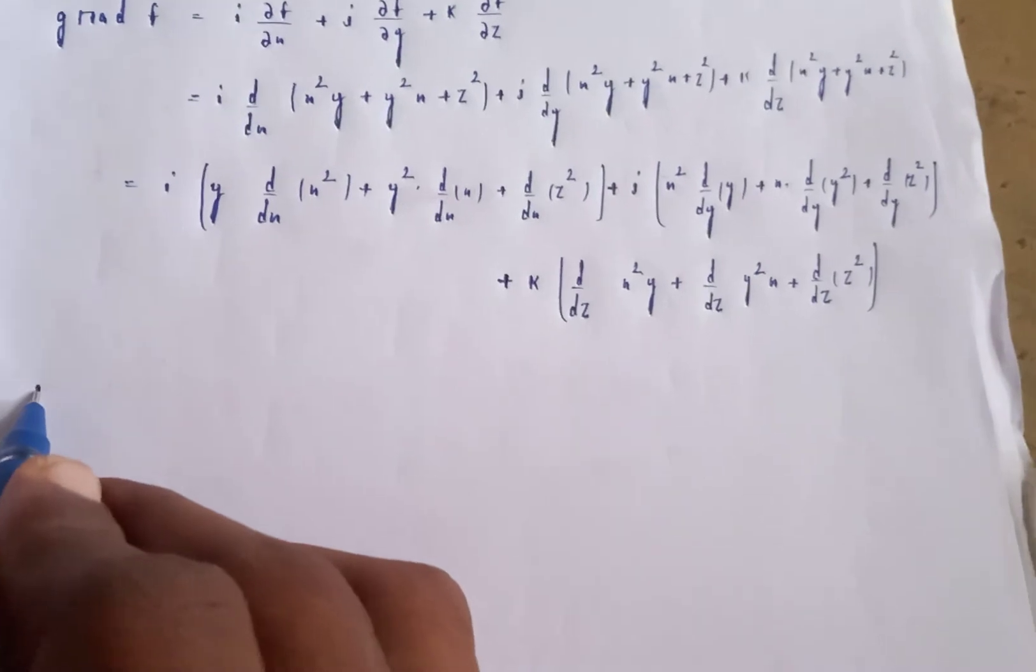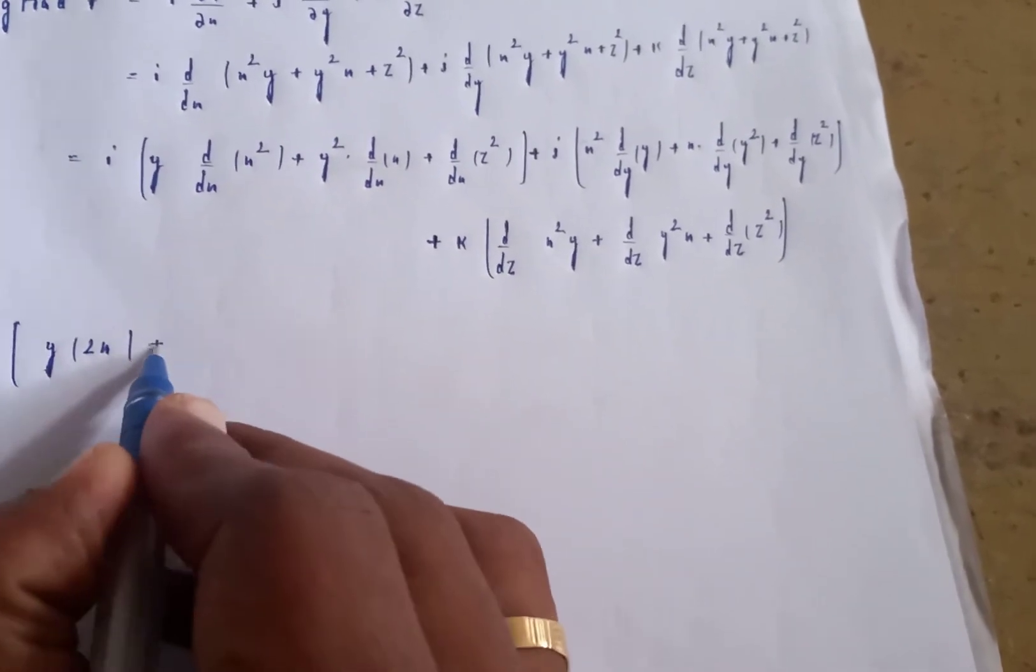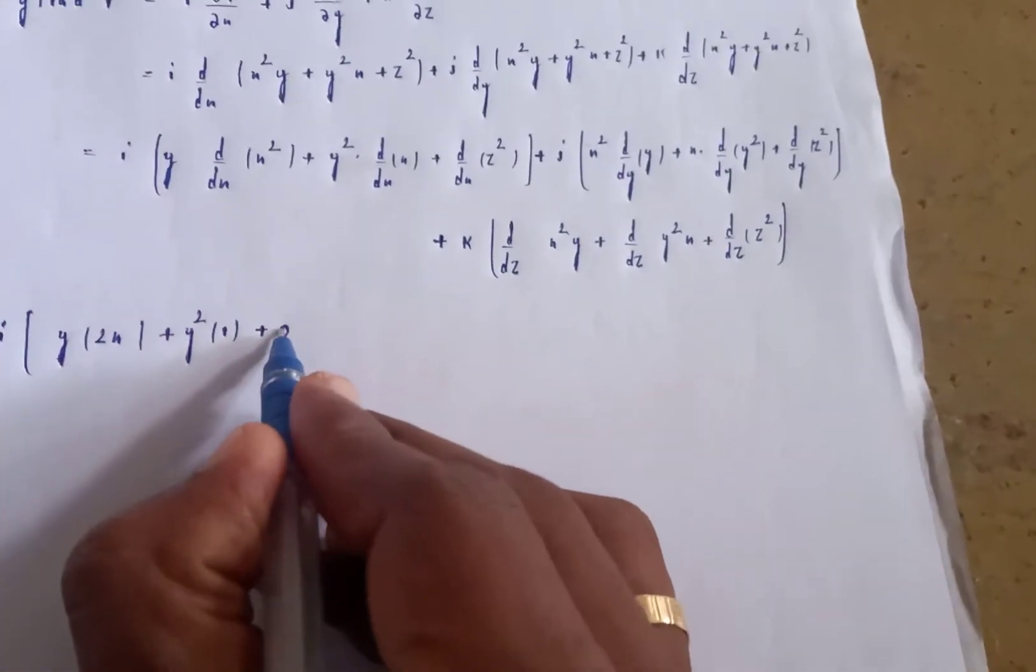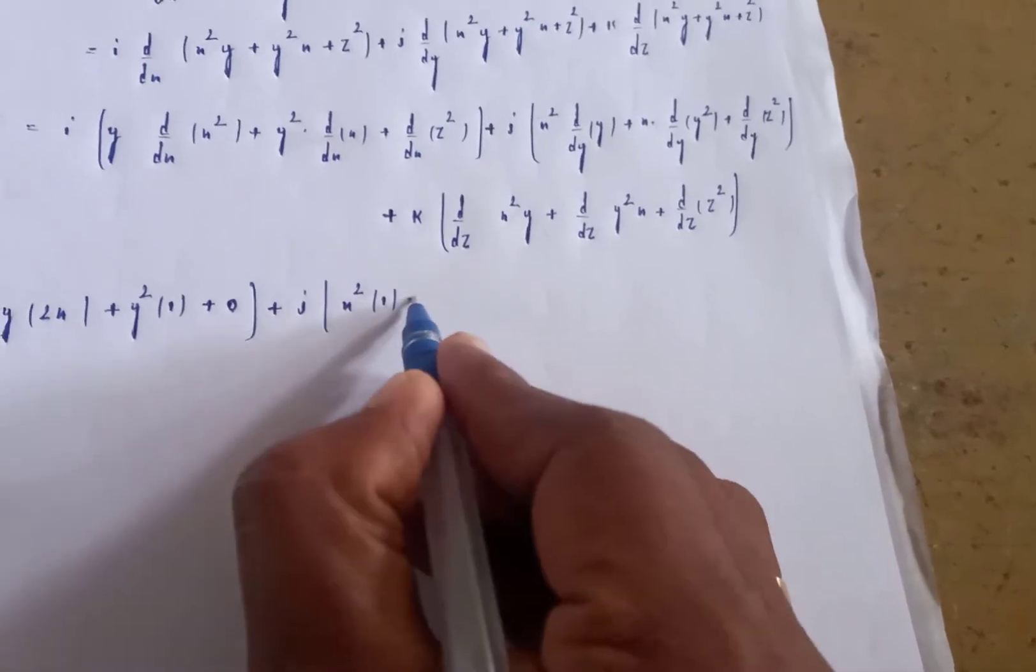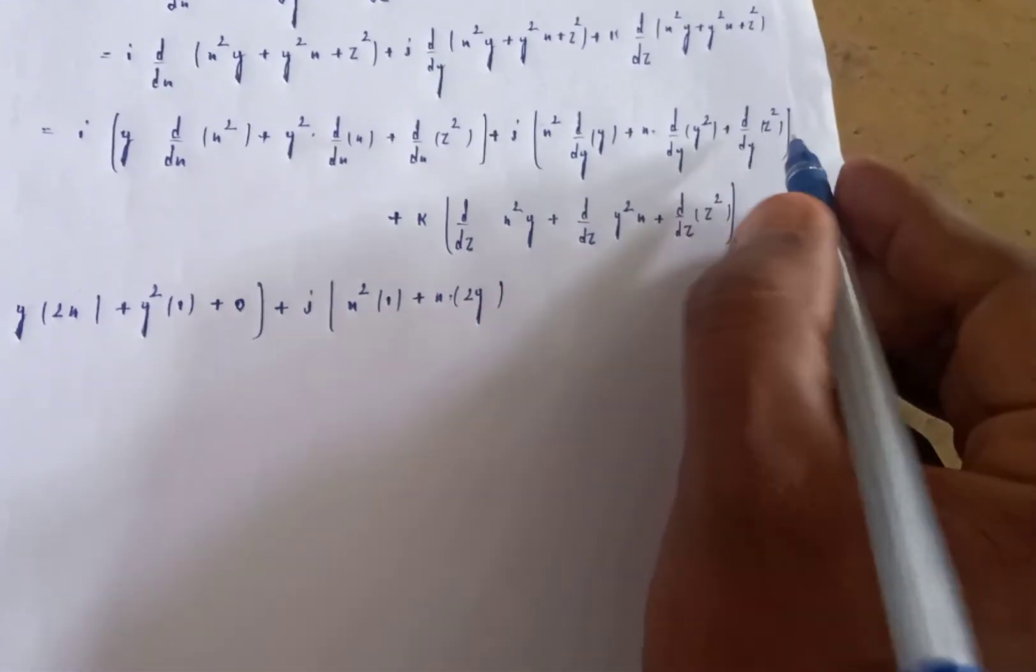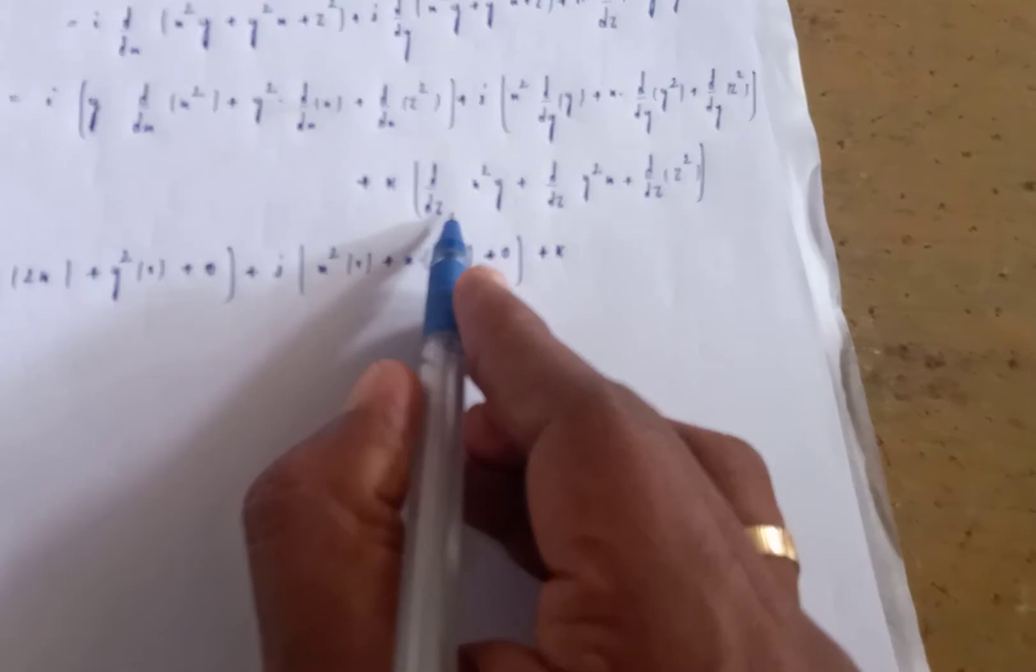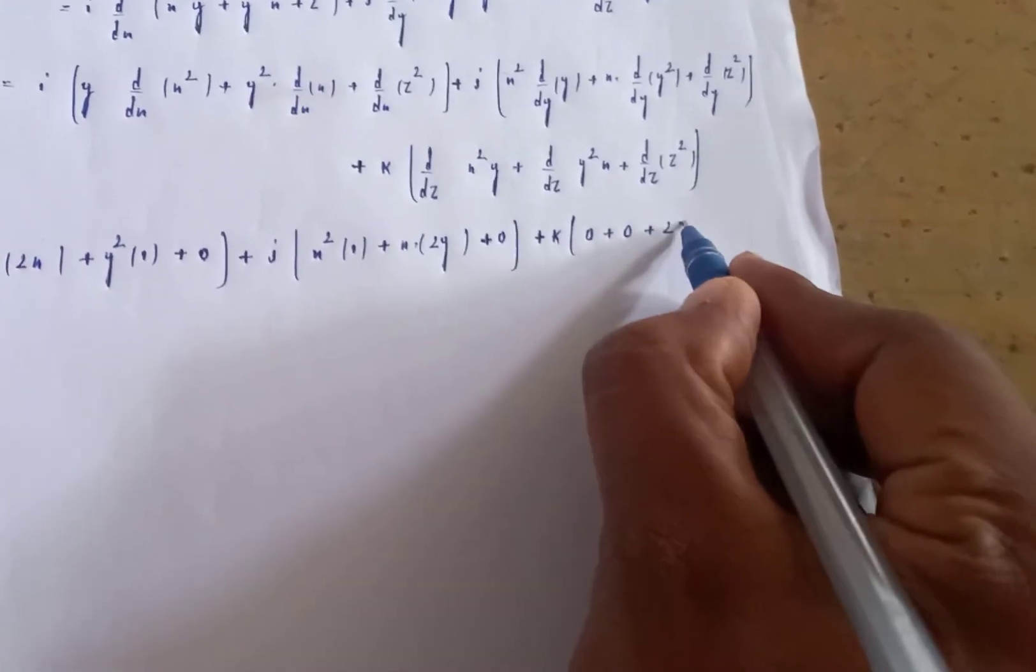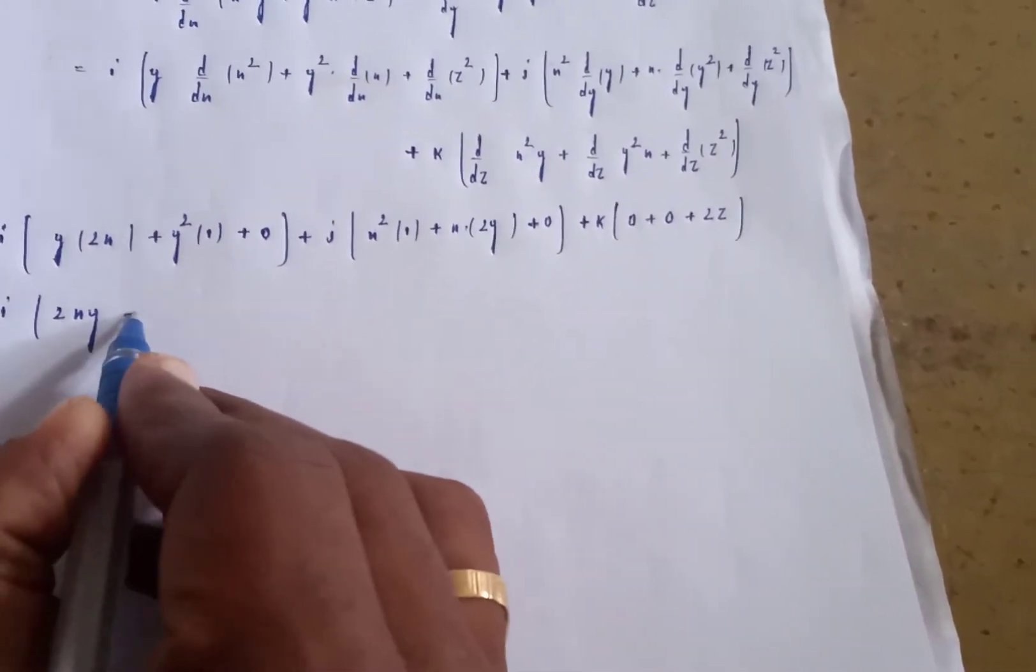So d/dy of y is 1, d/dy of y² is 2y. D/dy of z² with respect to y is 0. Plus j of x² times 1 plus x times 2y. Plus k times d/dz of z² is 2z. This gives i times (2xy + y²) plus j times (x² + 2xy) plus k times 2z.